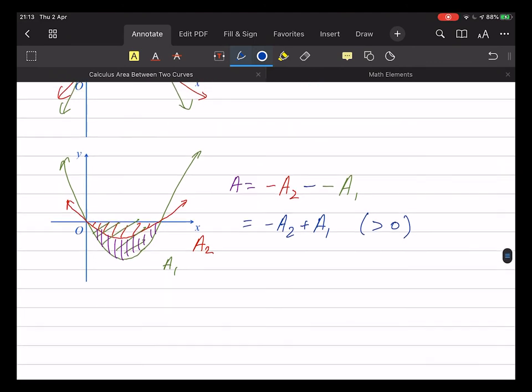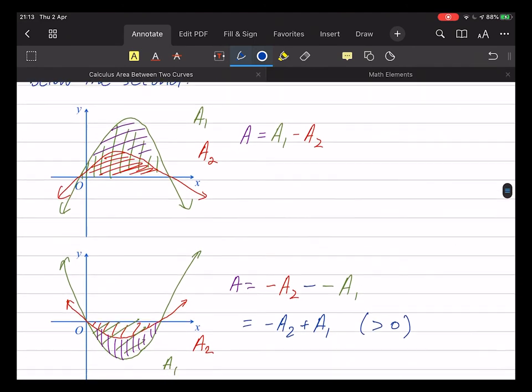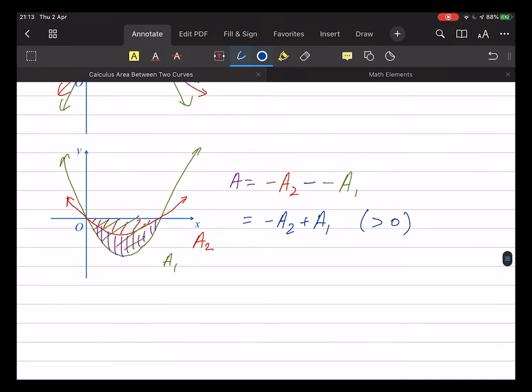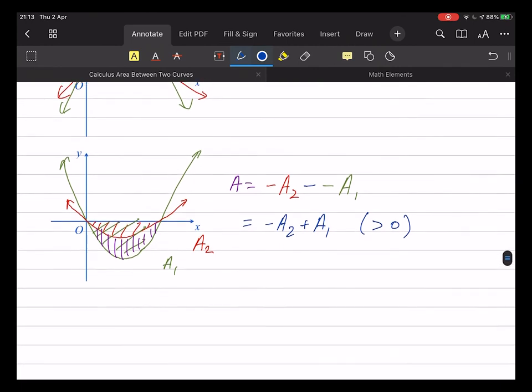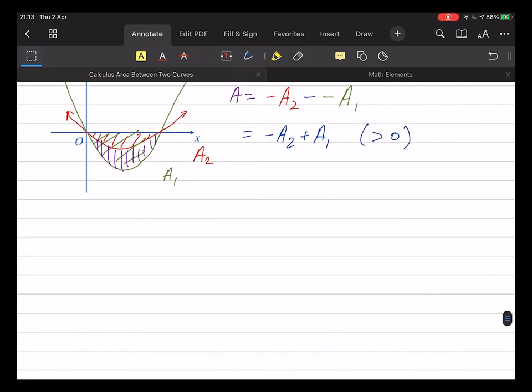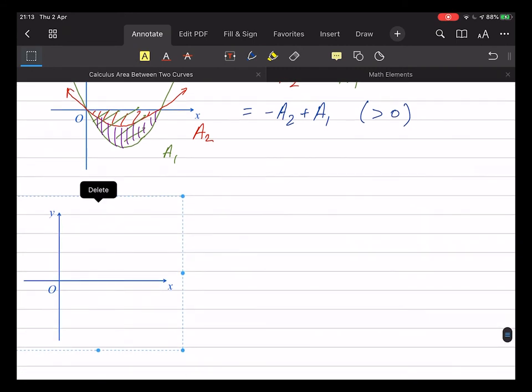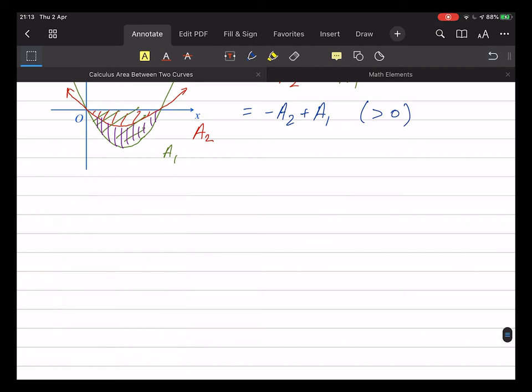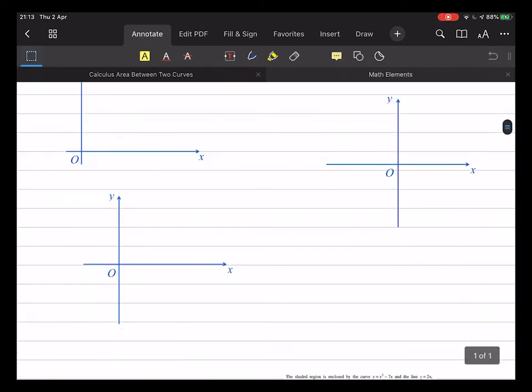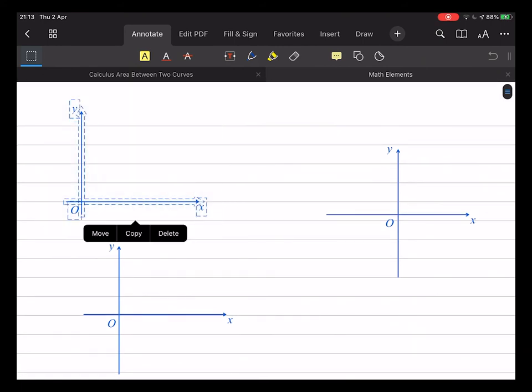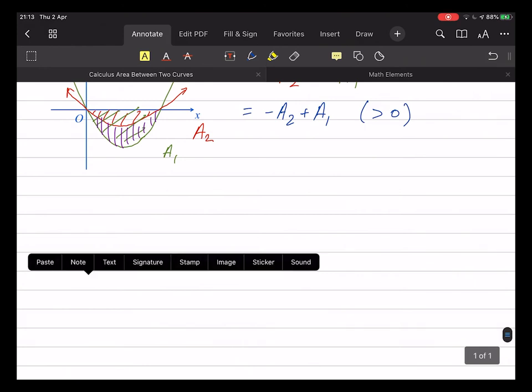And when you studied directed numbers in Year 7, you understood that then. So what are some things to look out for? This works until these curves cross over. So firstly, there's the obvious case where it's just one curve above another. And I'll do that last as a general sort of case. But as soon as these two things begin to cross over.